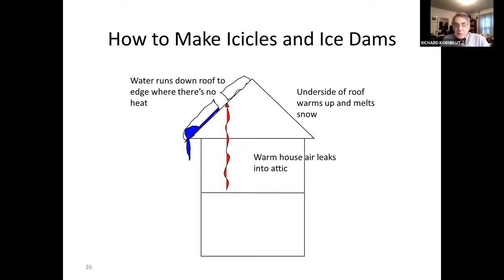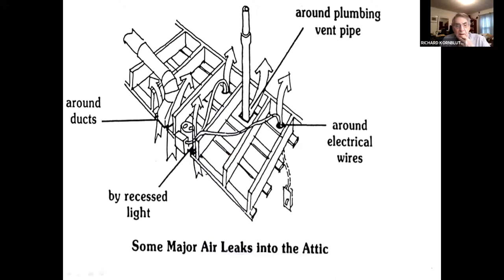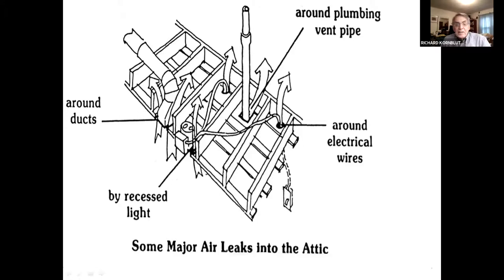So this is how ice dams form. You stop them by sealing all the holes in the framing at the top of the house where warm air — not just heat by conduction and radiation, but actual physical warm air — can leak from the building into the attic: around electrical wires, around plumbing vent pipes, through recessed light fixtures, around ducts, etc.